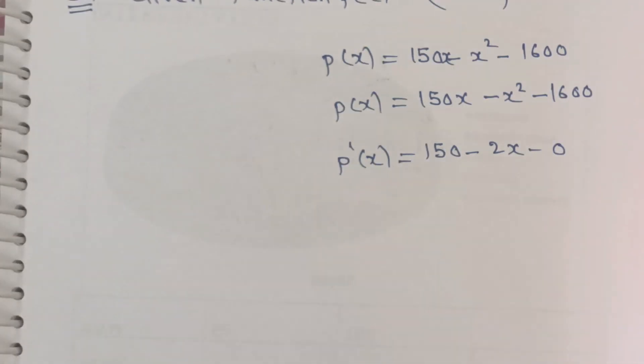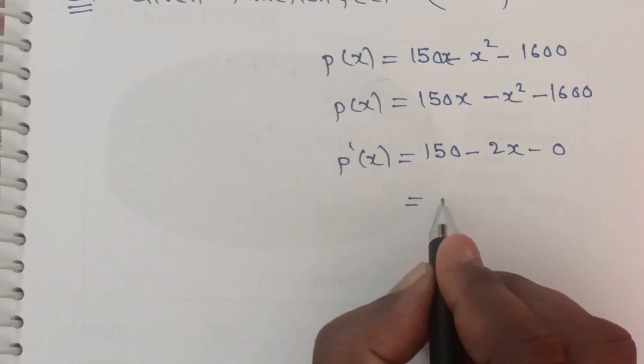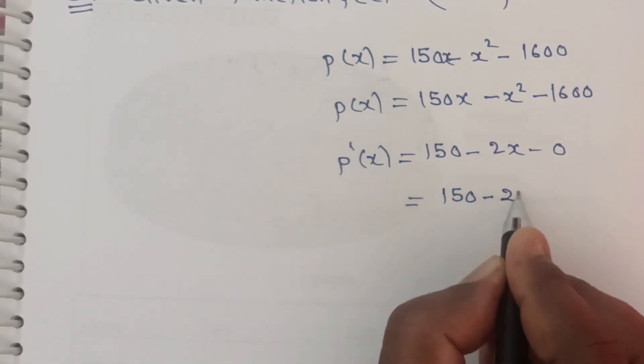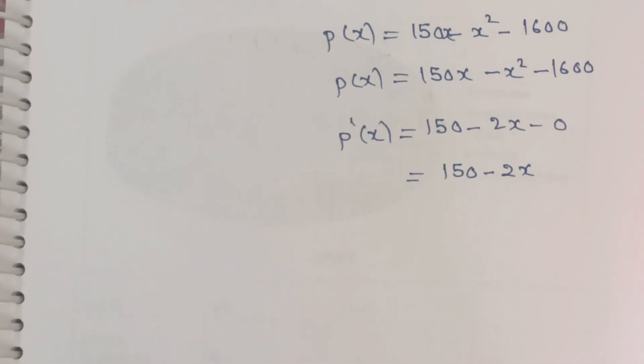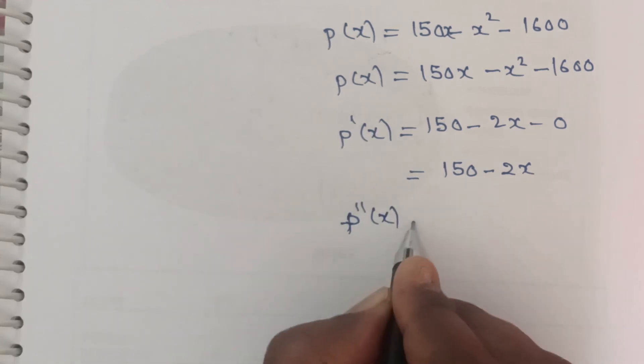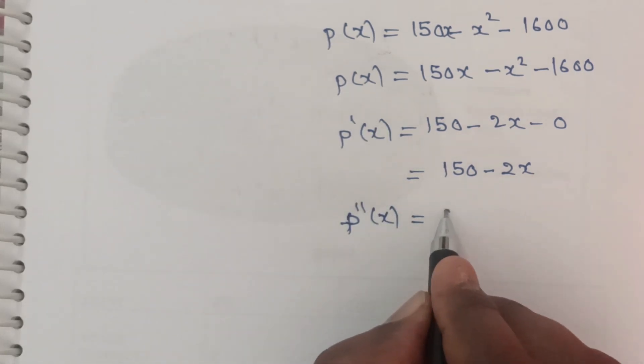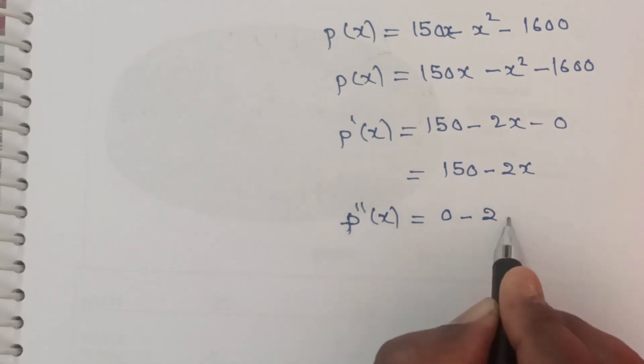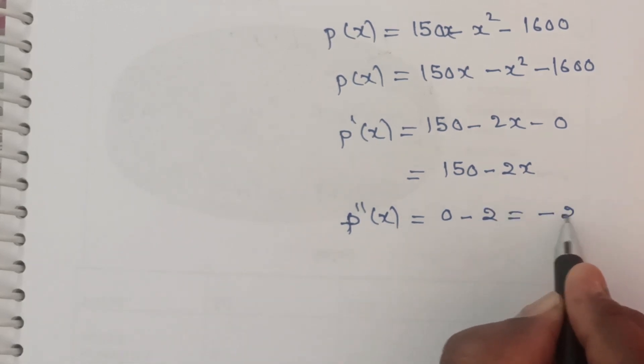First derivative: p'(x) = 150 - 2x. Differentiating again with respect to x: p''(x) = -2. Since this is less than 0, the function has a maximum.